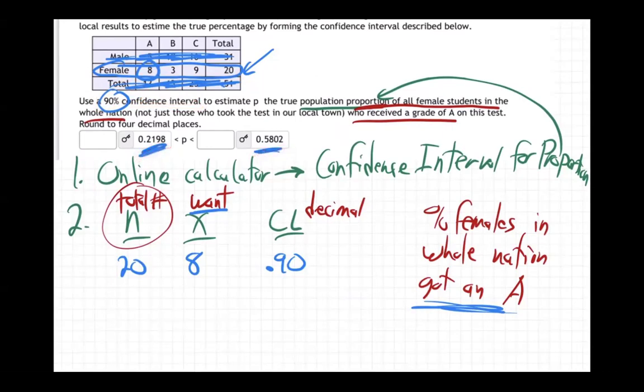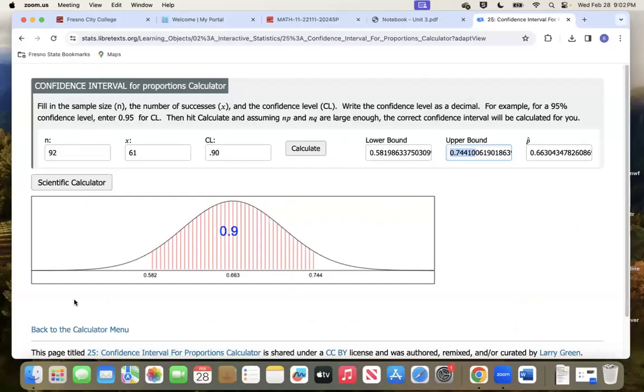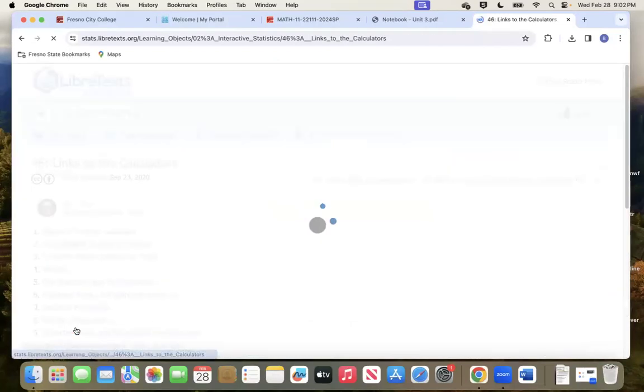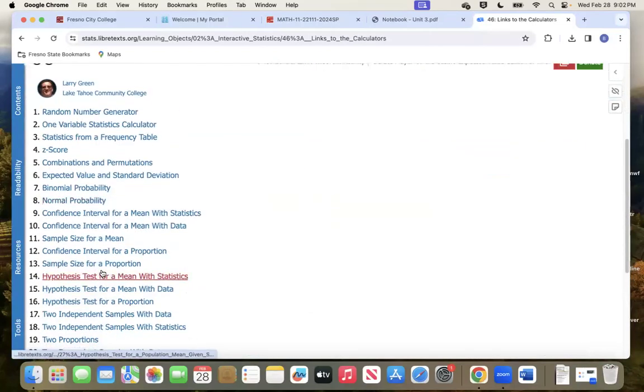How do we do that? Let me show you the online calculator. Okay, online calculator, let me go back here. So here's how it looks. You come in, you go, okay, I'm going to do number 12, confidence interval for a proportion. Not these up here, they're other confidence intervals. We're doing number 12, confidence interval for a proportion.